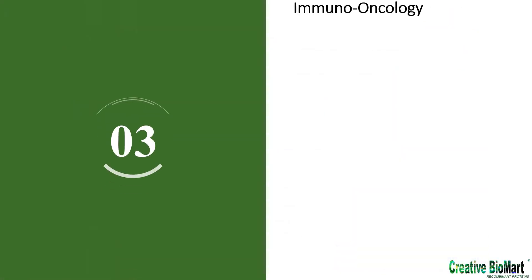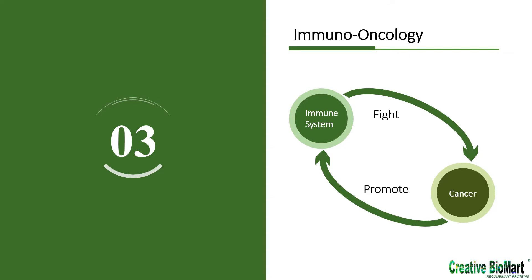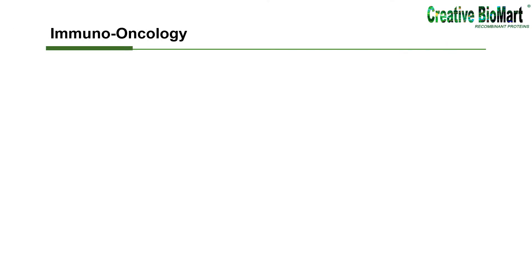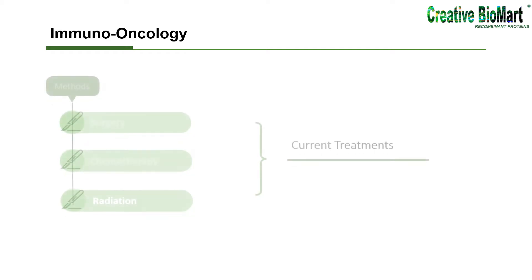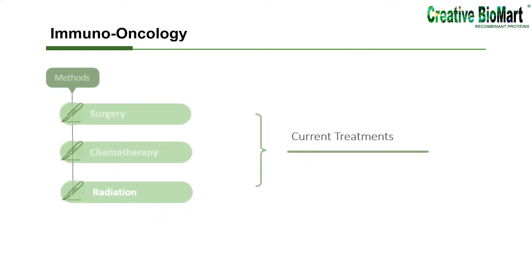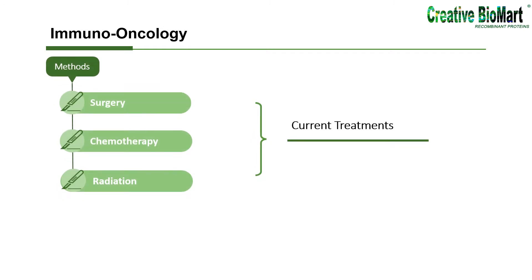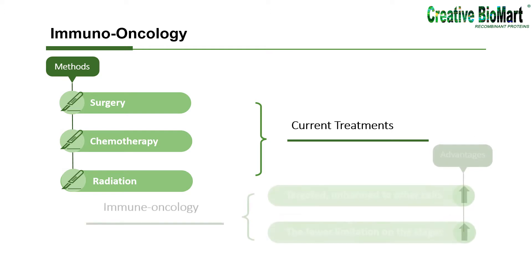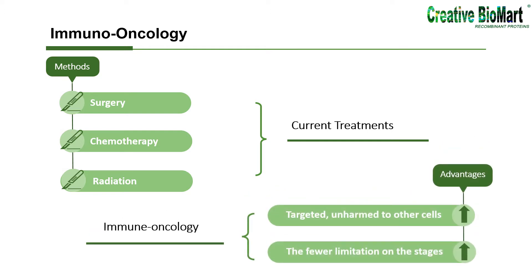Part 3: Immuno-Oncology. Immuno-Oncology is an innovative area that promotes the body's own immune system to fight cancer, which modifies the immune system to recognize the tumor as a foreign substance to the body that needs to be attacked. Compared with current treatments for cancer, such as surgery, chemotherapy, and radiation, immuno-oncology allows cancer cells to be targeted, leaving the rest of the cells unharmed, and it also has fewer limitations on the stages of cancer.